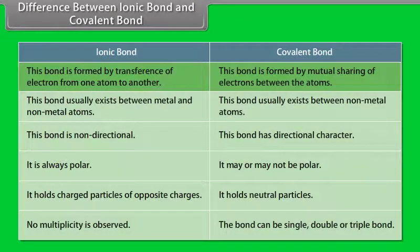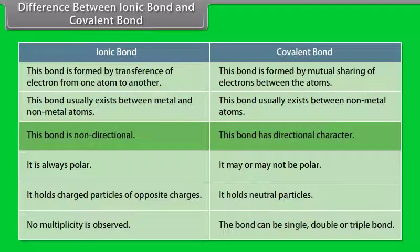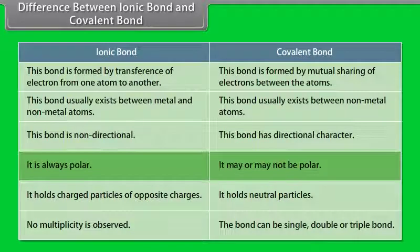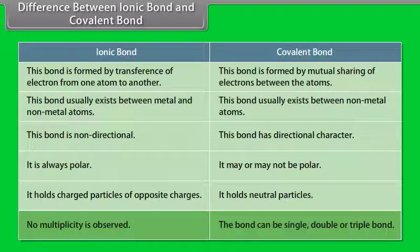Differences between ionic bond and covalent bond. An ionic bond is formed by transference of electrons from one atom to another, whereas a covalent bond is formed by mutual sharing of electrons. An ionic bond usually exists between metal and non-metal atoms, whereas a covalent bond usually exists between non-metal atoms. An ionic bond is non-directional, whereas a covalent bond has directional character. An ionic bond is always polar, whereas a covalent bond may or may not be polar. An ionic bond holds charged particles of opposite charges, whereas a covalent bond holds neutral particles. No multiplicity is observed in an ionic bond, whereas a covalent bond can be single, double, or triple.